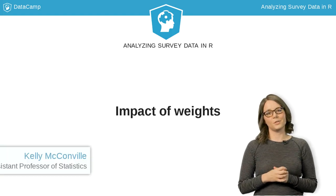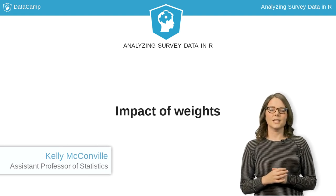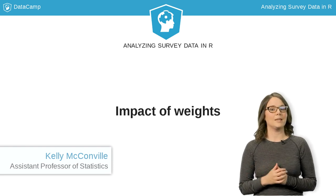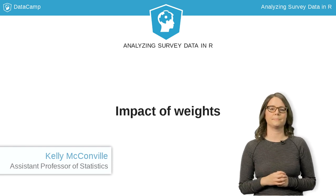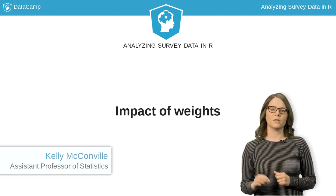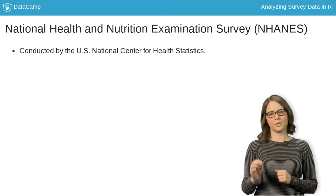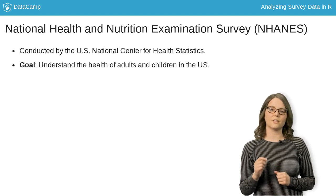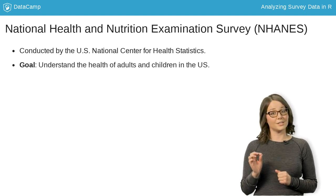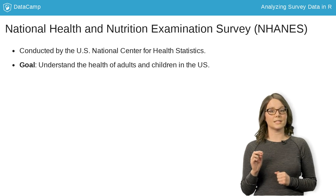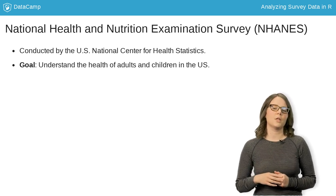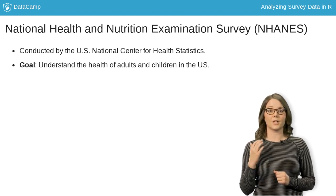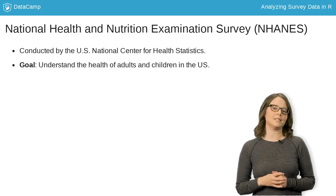Now that we have a handle on common survey design structures, let's look at a real-world survey to see how the survey design and the weights impact our analyses. We will explore the National Health and Nutrition Examination Survey. The goal of NHANES is to assess the health of people in the U.S. Because the survey includes a medical exam in a mobile health vehicle, the researchers have put a lot of care into developing a cost-effective, representative sampling design.